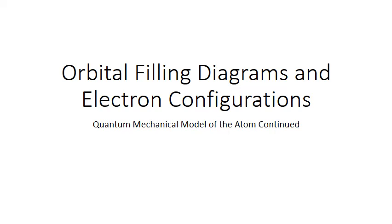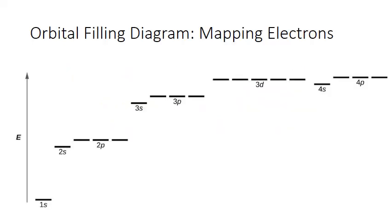In the quantum mechanical model, you can describe the most probable location of any electron in an atom using four different quantum numbers. In this PowerPoint, we're going to look at orbital filling diagrams and electron configurations as a more visual way of mapping all the electrons in an atom. An orbital filling diagram is a visual representation of all the different quantum number combinations and the different electron orbitals those combinations represent.